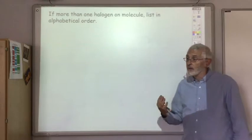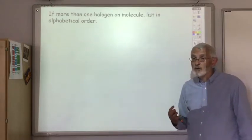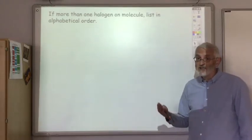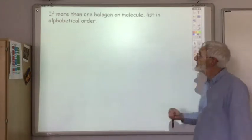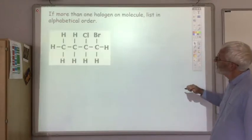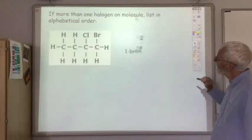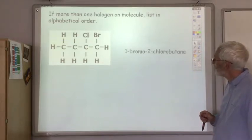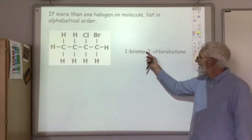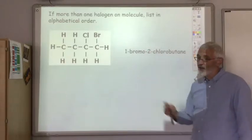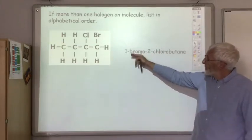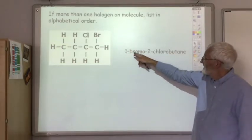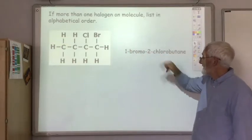If there's more than one different type of halogen then we name them in alphabetical order — so bromines come before chlorines, then fluorines, then iodines. For example, this one is 1-bromo-2-chlorobutane. Remember that hyphens are always used to separate letters from numbers and numbers from letters; otherwise it's just one big word. The bromine is first here not because it's on the first carbon but because B comes before C in alphabetical order.